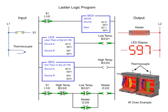In this on-off temperature control example, the heater turns on when the temperature falls to or below 597 degrees, and turns off when the temperature reaches 603 degrees or more.